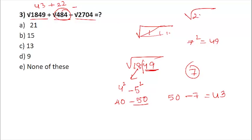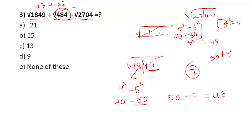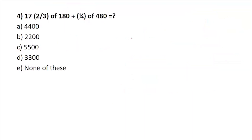For the square root of 2704: 27 lies between 5² and 6², so between 50 and 60. The last digit is 4, and 2² = 4, so the candidate digit is 2. The base is 50; adding 2 gives 52 — we add because we want a number between 50 and 60, and 48 would be outside the range. So the square root of 2704 is 52. Then adding 43 and 2 gives 45; 45 + 20 = 65; 65 minus 52 = 13. The answer is option C.